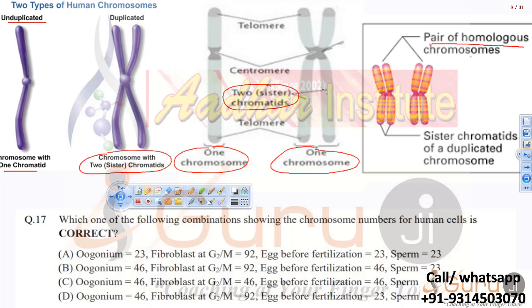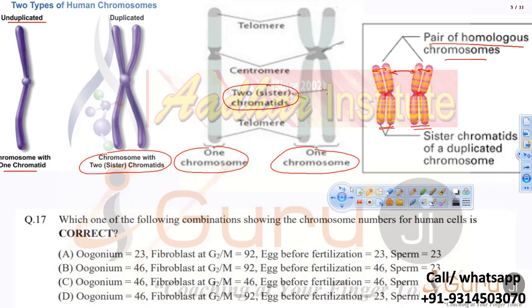Some students get confused with homologous chromosomes. Homologous chromosomes are a pair: each has sister chromatids joined at the centromere. Sister chromatids are those originating from the same source and joined together; non-sister chromatids are those that are not joined. The key point is: when chromosome numbers are asked, do not confuse chromatids with chromosomes.